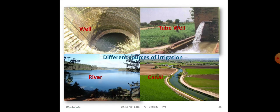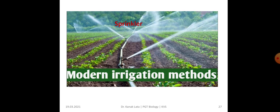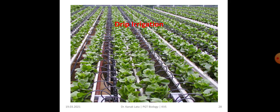Here you can see the different sources of water — well, tube well, river, canal. Here is the traditional method of irrigation — dhekli, chain pump, moat, and rahat. Moat is the pulley system, whereas rahat is the lever system. This is the modern method of irrigation — sprinkler system and drip irrigation.